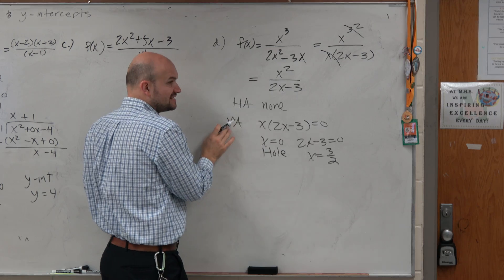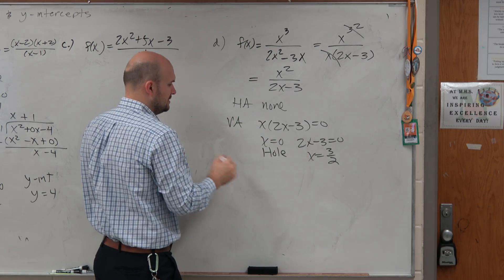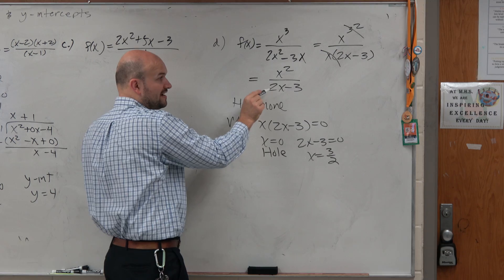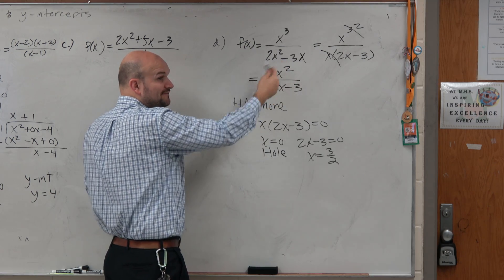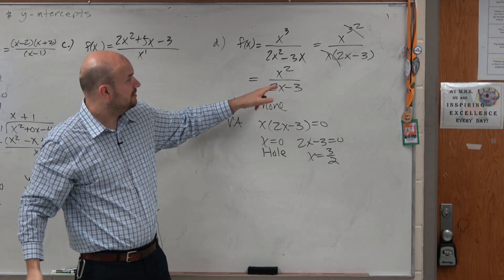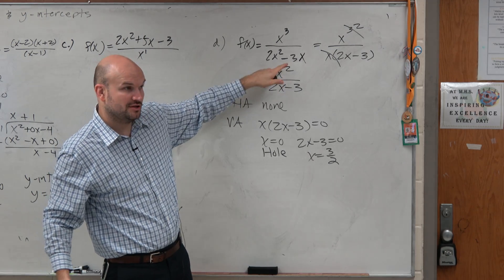So when you just asked for a vertical asymptote, there's only one, which is at 3 halves. However, in the simplified version, my denominator is still, even with the hole, I still have a smaller value in the denominator than the numerator.